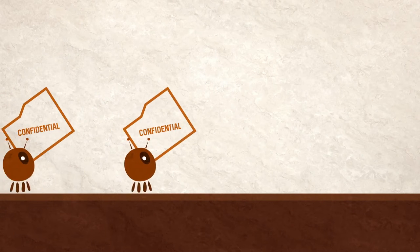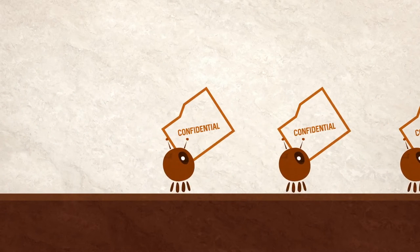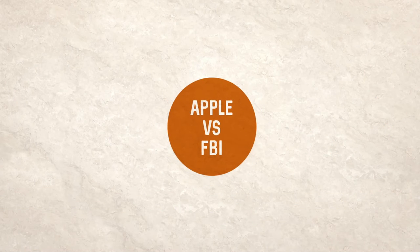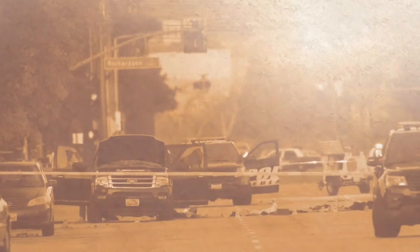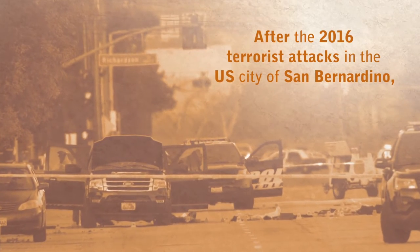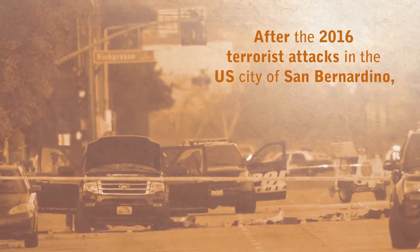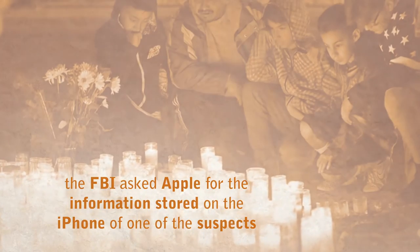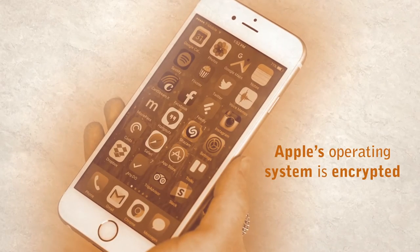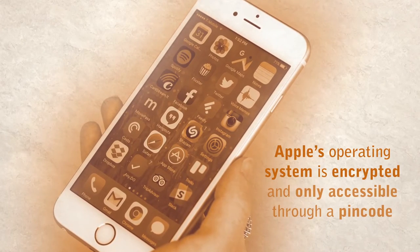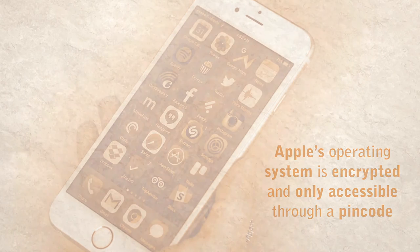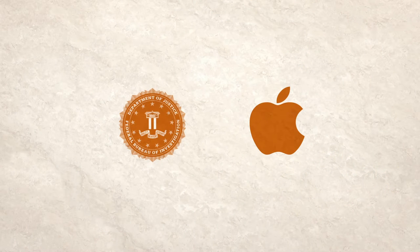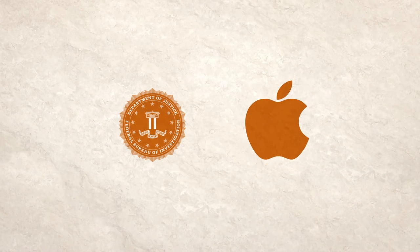Let's look at two examples of privacy and data protection in the real world. First, let's look at the Apple v. FBI case. After the 2016 terrorist attacks in the U.S. city of San Bernardino, the FBI asked Apple for the information stored on the iPhone of one of the suspects. However, Apple's operating system is encrypted and only accessible through a PIN code. The FBI asked Apple to modify the system to let them in. Apple refused.